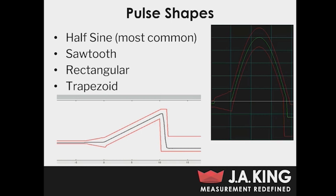But there are other pulse shapes as well, other than just half sine, such as sawtooth, rectangular, and trapezoidal. The sawtooth shape is what you can see there at the bottom of the screen. Half sine is the most common, but these days specifications are actually moving more towards sawtooth, and that's because there's a more realistic residual spectrum for sawtooth pulse shapes.